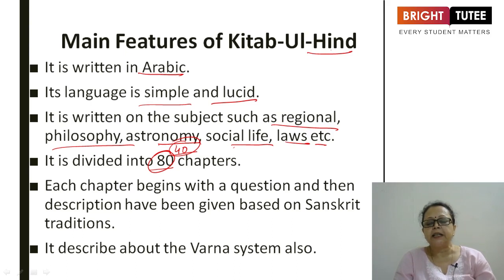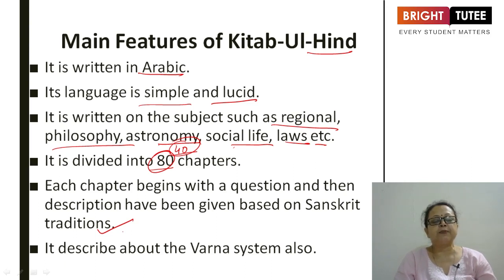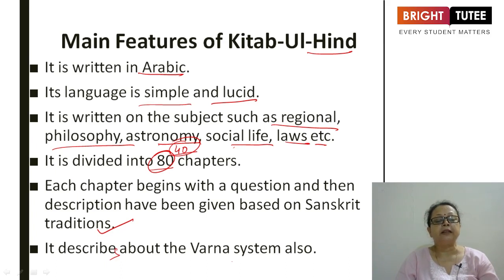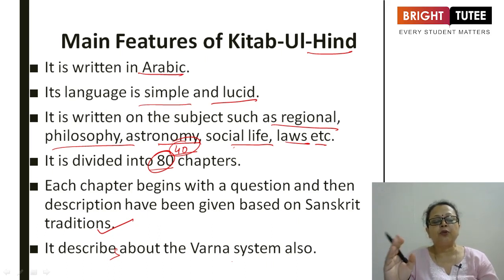Each chapter begins with a question and then a description is given based on Sanskrit traditions. The book also describes the Varna system, which was very prominent, as Indian society was broadly divided on the basis of Varna system — the colour of skin — into four different categories, which was also explained by Al-Biruni in his book Kitab-ul-Hind.